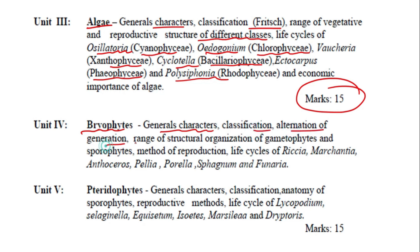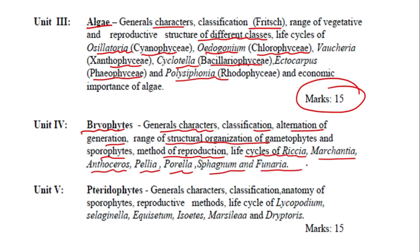Unit 4 includes bryophytes: general characters, classification, alternation of generation, range of structural organization of gametophytes and sporophytes. This unit will also carry 15 marks.